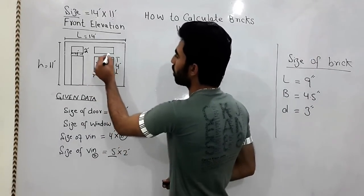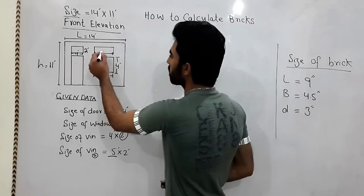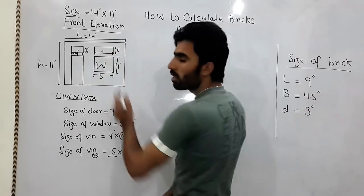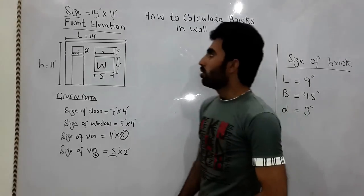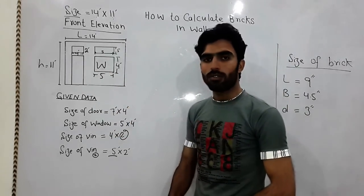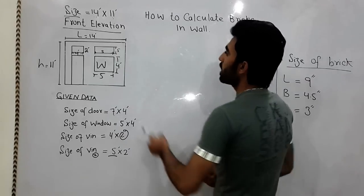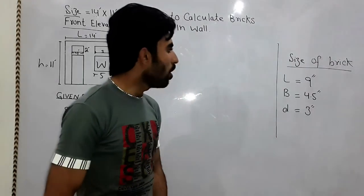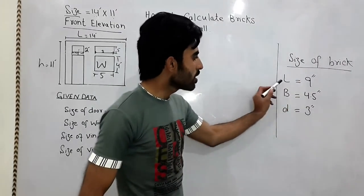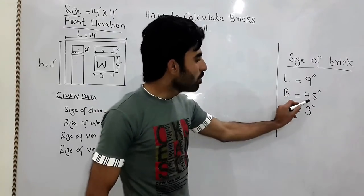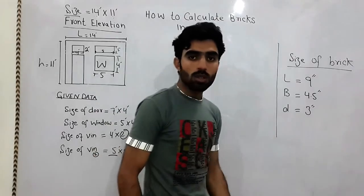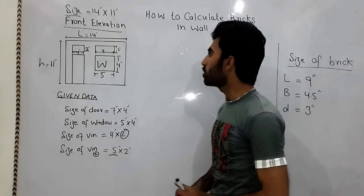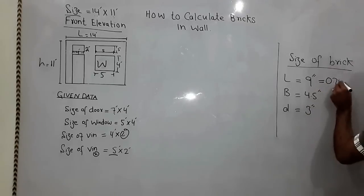The size of the second ventilator is 5 feet, same as the window width. Now, the thickness of this wall will be 9 inches because the size of the brick is: length 9 inch, breadth 4.5 inch, depth 3 inch. So this is a 9-inch brick, meaning the wall thickness will be 9 inches.